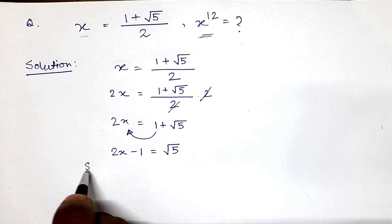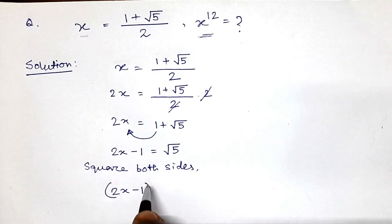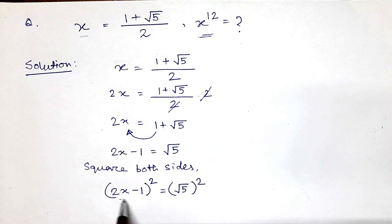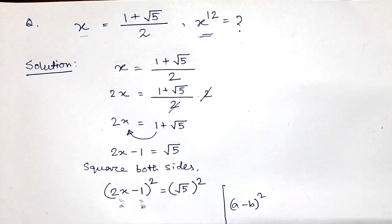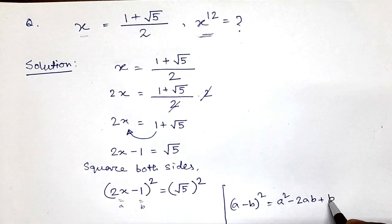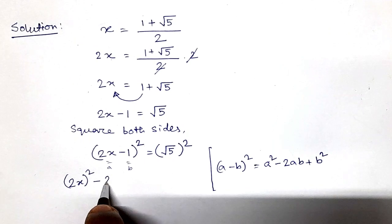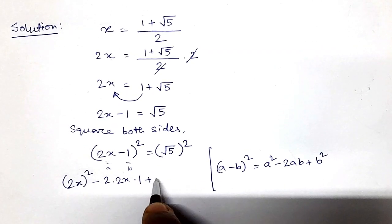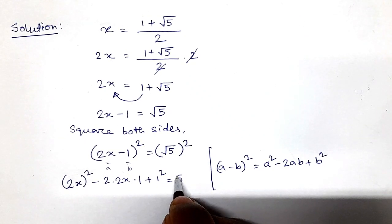Now we will square both sides. By squaring both sides we get at the left hand side (2x minus 1) whole square, and on the right side root of 5 squared. Using the (a minus b)² formula — a² minus 2ab plus b² — where a is 2x and b is 1, the left side becomes 2x squared minus 2 times 2x times 1 plus 1 squared, and the right side is simply 5.